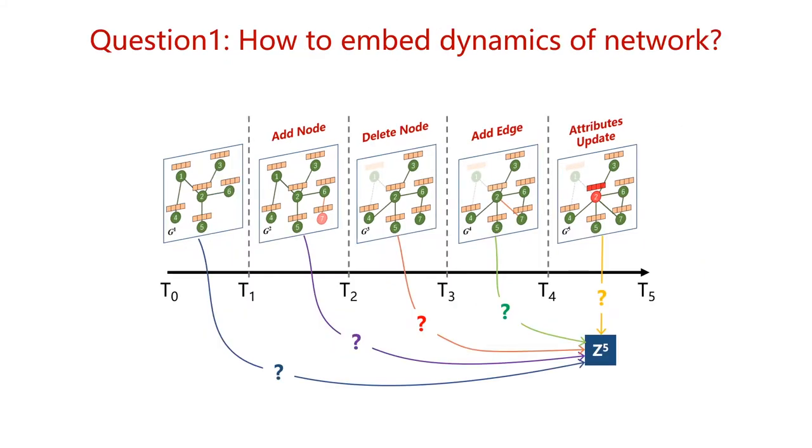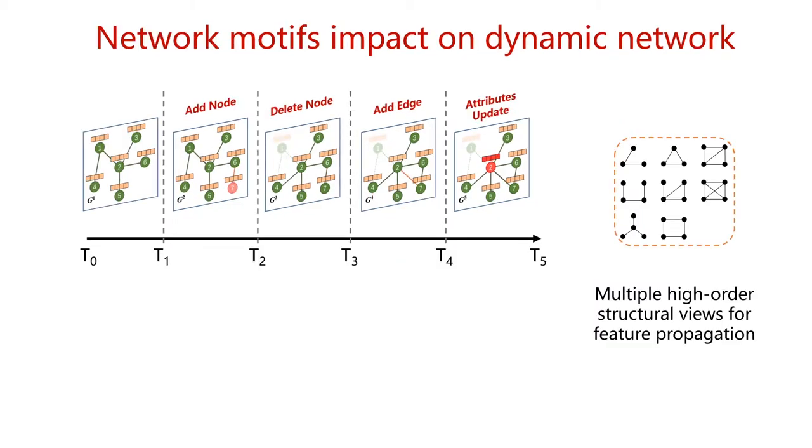The basic question of dynamic attributed network embedding is how to embed historical dynamics into representation, which requires us to learn the embedding of nodes from constantly changing network structure and attributes. However, it is difficult to completely model the dynamics of network using only the pairwise interaction between nodes.